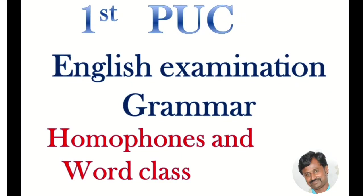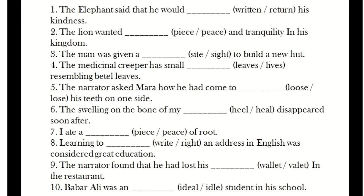Hi everyone, welcome to Learn Easily. Here, the First PUC English examination grammar — homophones and word class. In this video I am going to tell you about homophones. Homophones means homo — same, phones — sounds. The words which have the same sounds but are different in spelling and different in meaning are called homophones. The two words have the same sounds but they are different in spelling and meaning.